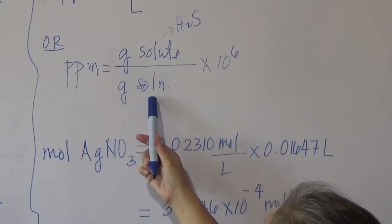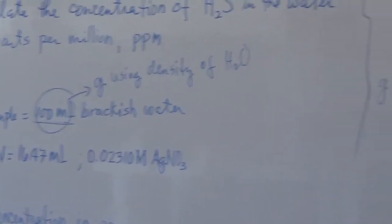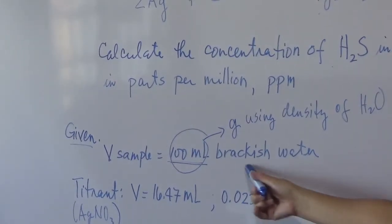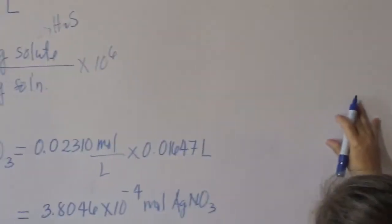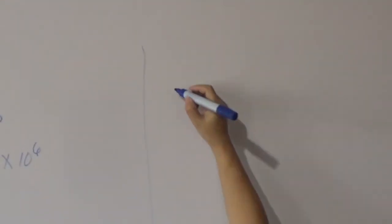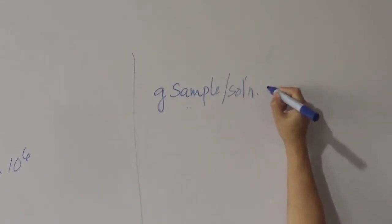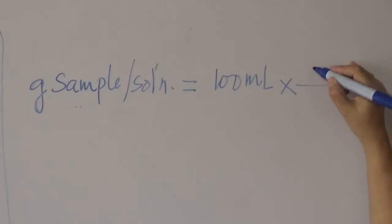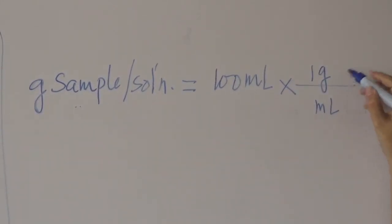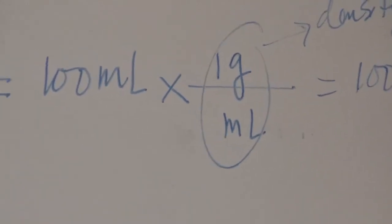We need to know the amount of the solution in grams. What is given is volume, so we need to use the density of water since the sample is brackish water. The density of water is 1 gram per mL. So, grams of sample = 100 mL × 1 gram per mL = 100 grams of the sample, which is the brackish water solution.